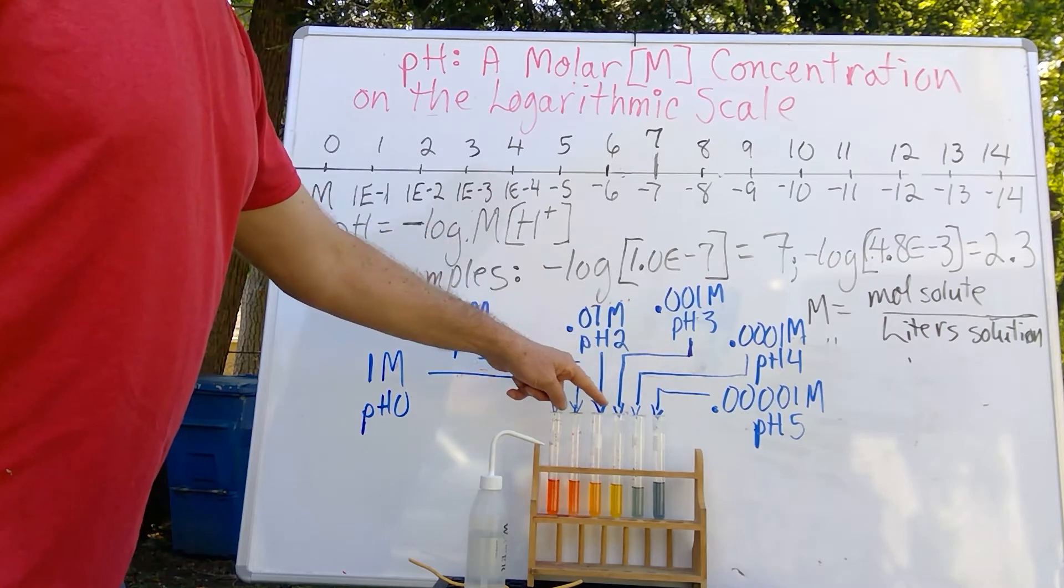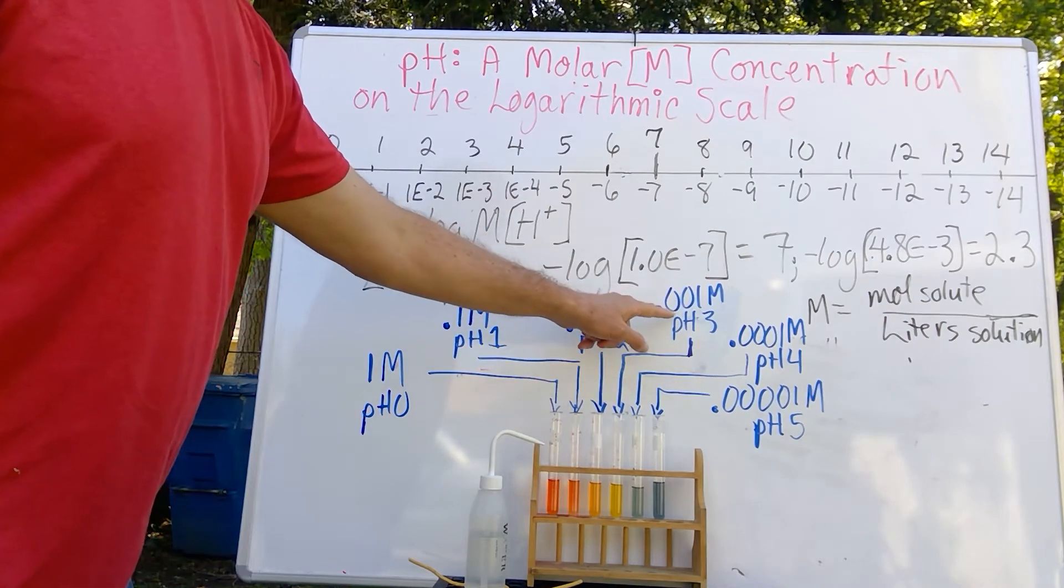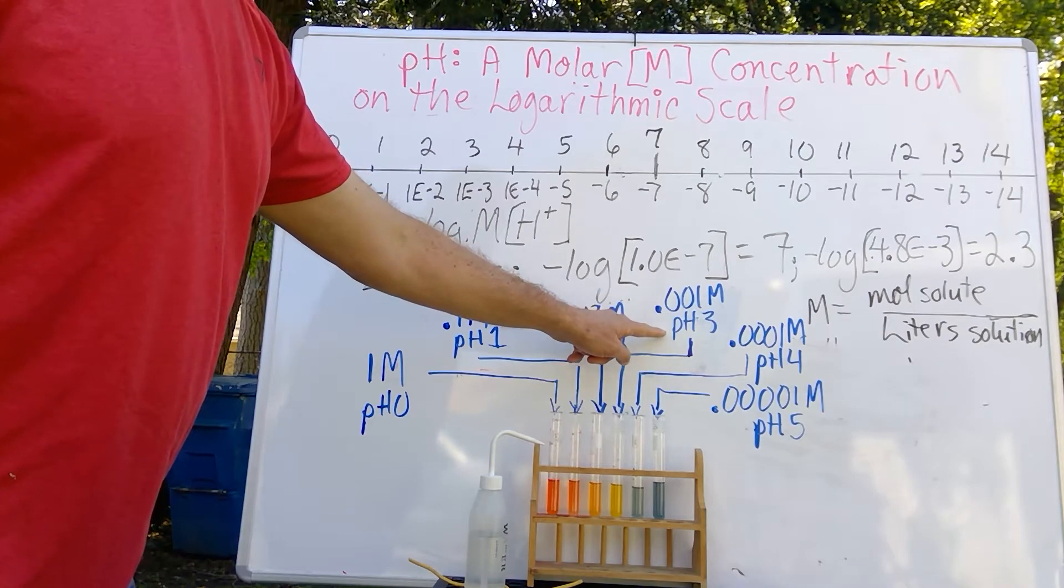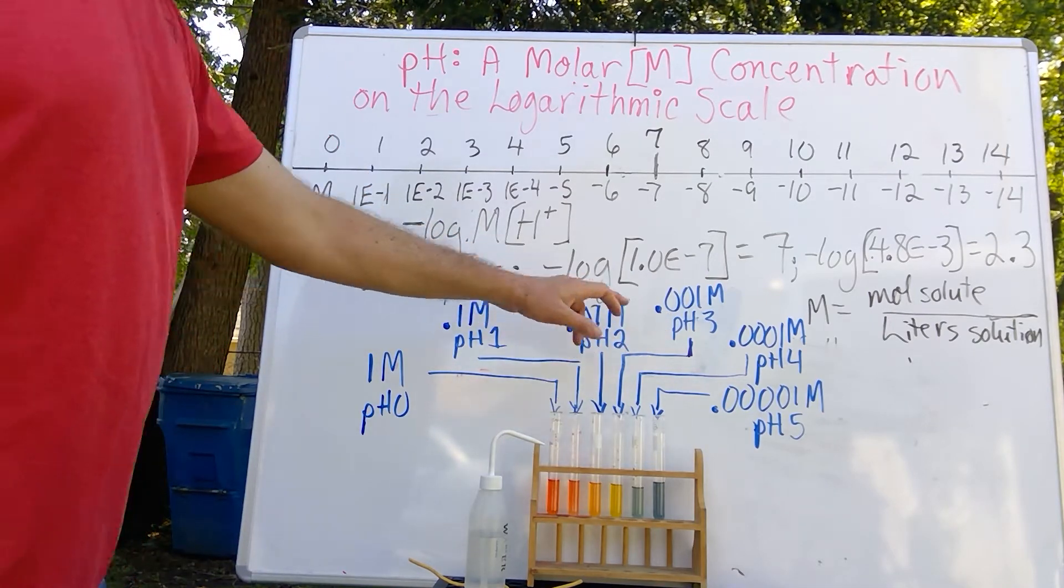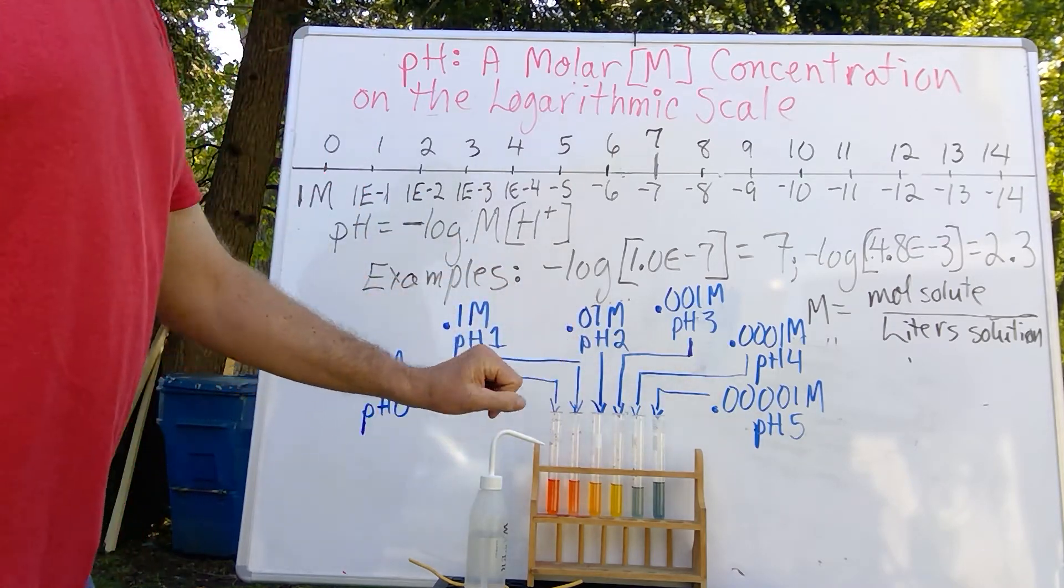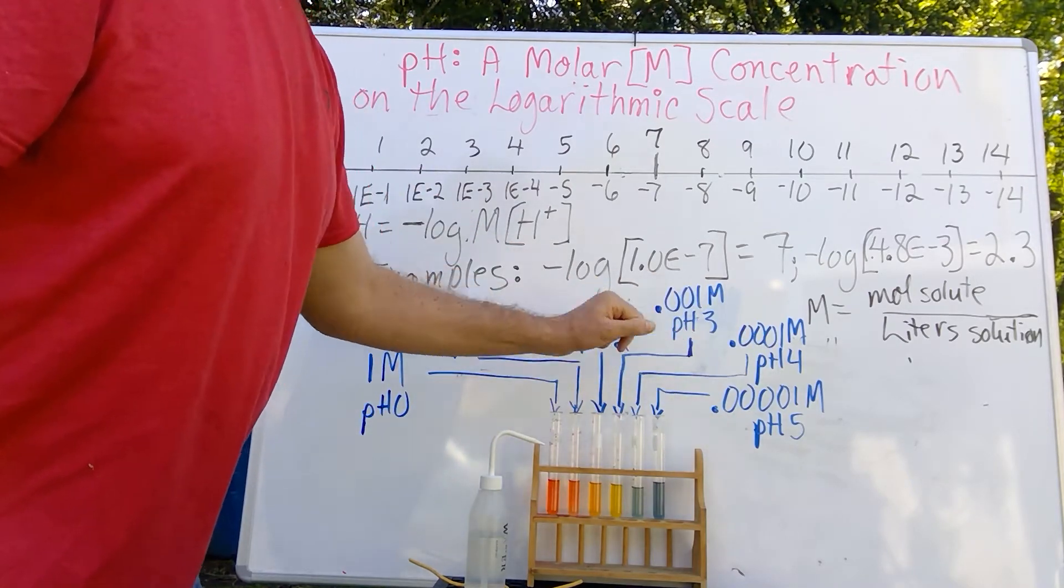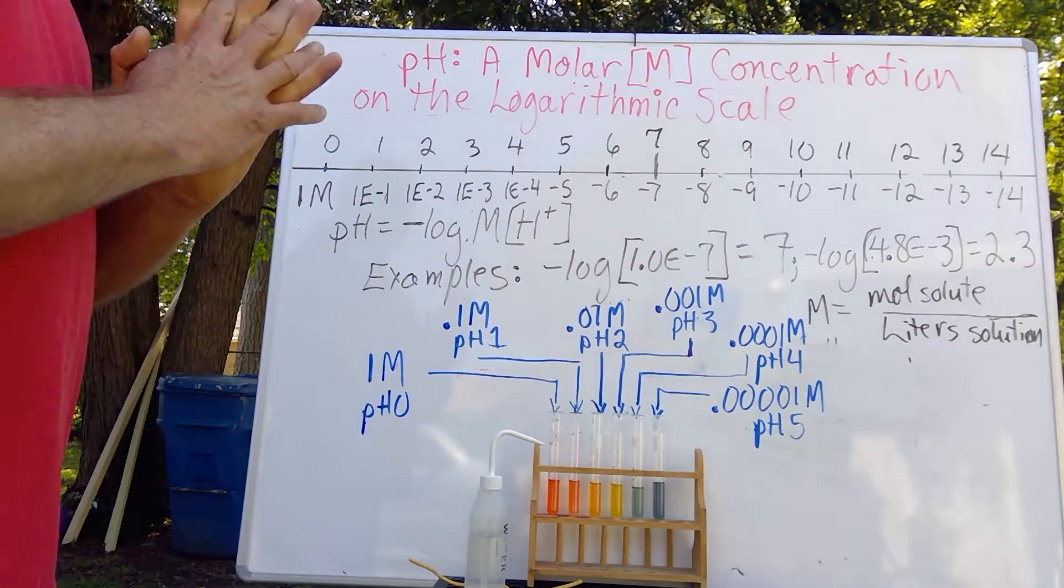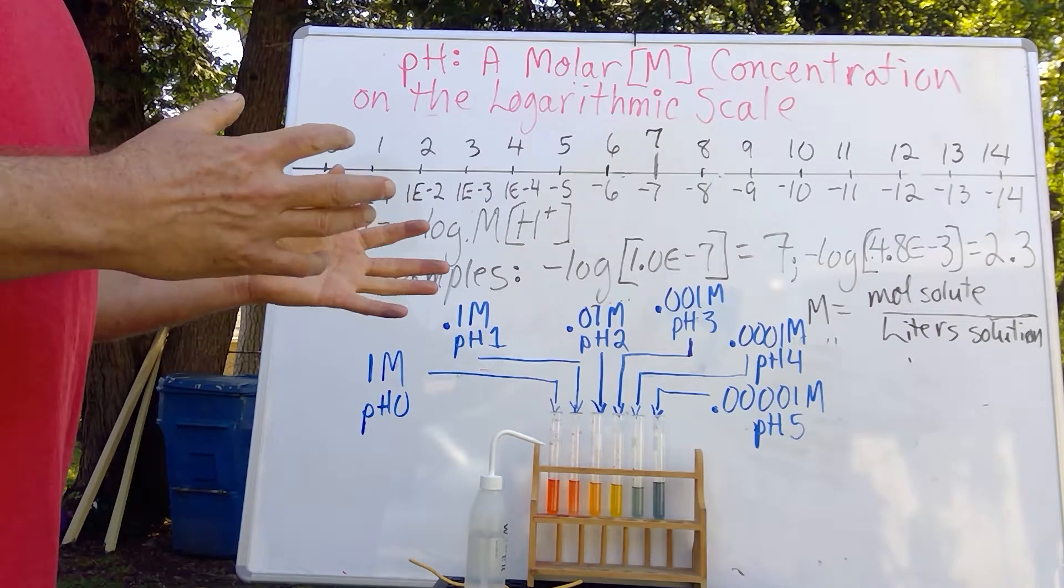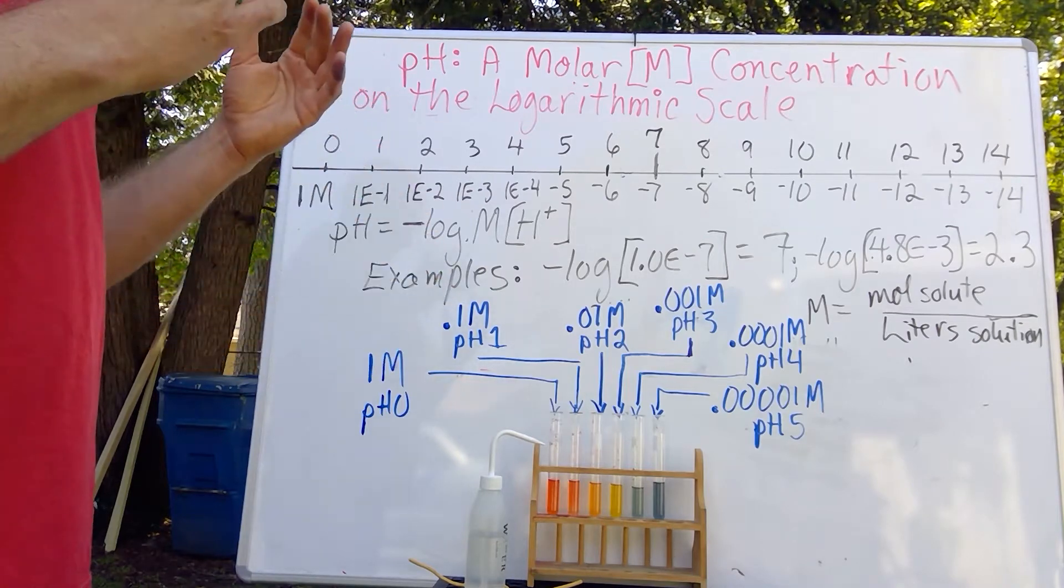And then we successively weaken by another factor of 10 or another decimal placeholder, 1e negative 3. Negative log of 1e negative 3 is pH 3. Then we weaken it down by another factor of 10 to pH 4, and then to pH 5. So, once again, this follows pretty much our decimal system of tens, of factors of tens.